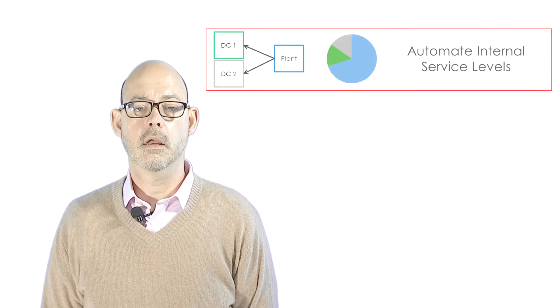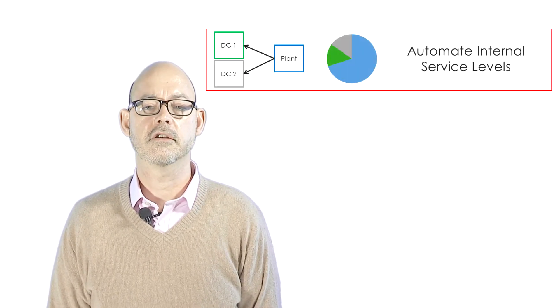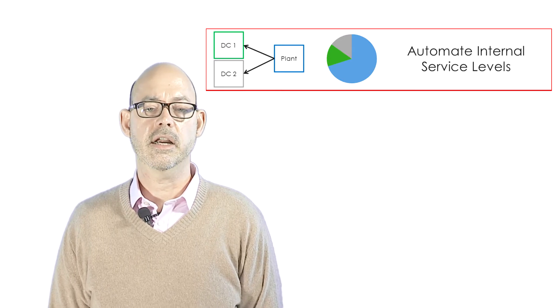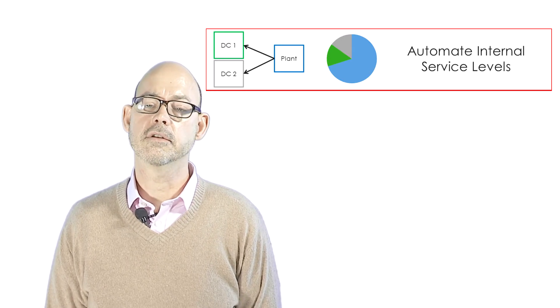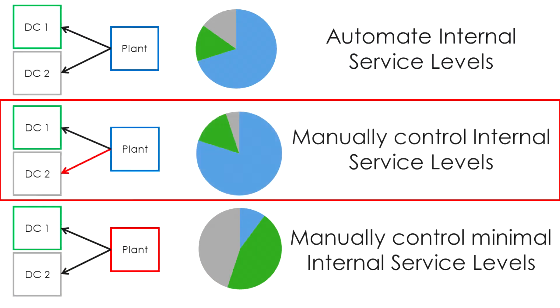The terminology may change between industries and companies, but you may have heard of terms like push versus pull. IBP asks: do you want to treat this internal downstream location like any other external customers, and thus hold safety stock? Do you want to make them responsible for their own safety stock and hold nothing? Or do you want to do something in the middle that pools the risk and optimizes safety stock levels across the network?